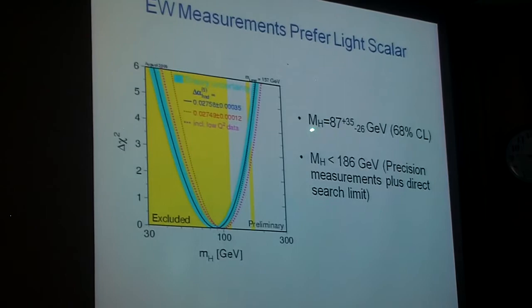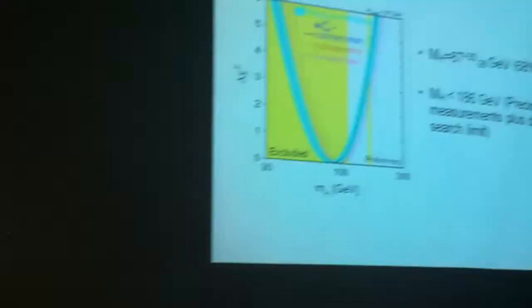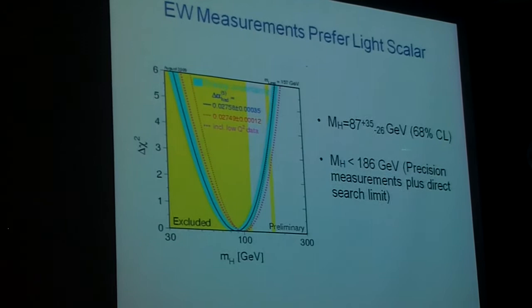That should worry you because that's in a region excluded by direct searches. The direct searches are this yellow line here of 114 GeV, but note the large errors. It only depends logarithmically on the scalar mass. So when I actually do my statistics, the 95% confidence upper bound is 186 GeV. So we suspect that this scalar is less than about 186 GeV.